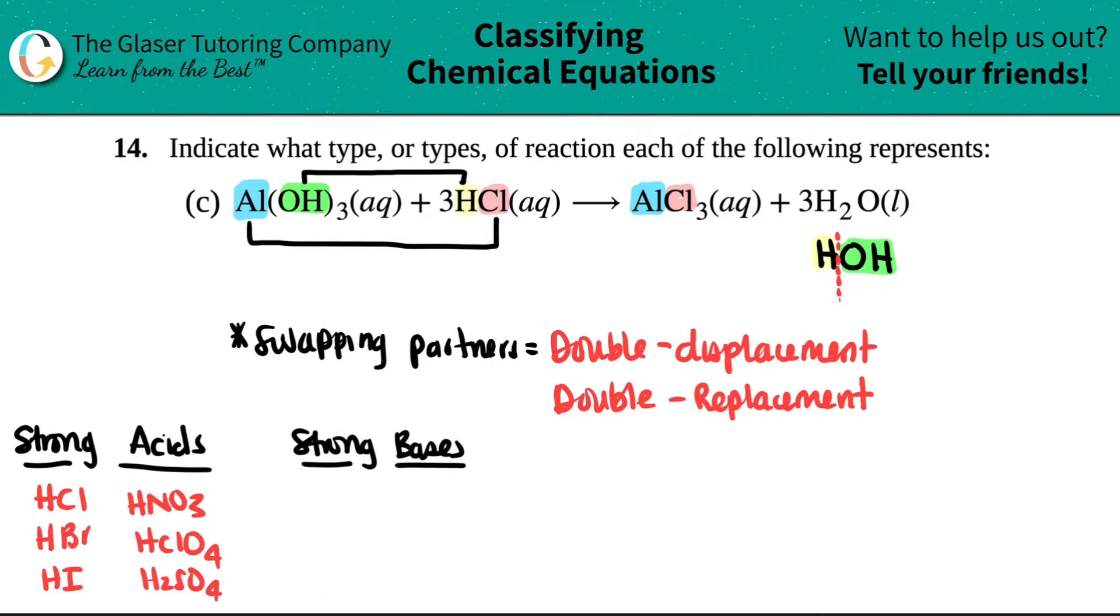Your strong bases, there's usually six of them, but also this is teacher or professor specific. So just make sure that my list is matching up with their list. You might need to know like a couple of more, but for the most part, strong bases are usually LiOH, NaOH, KOH, and then we have Ca(OH)₂, Ba(OH)₂, and then Sr(OH)₂.